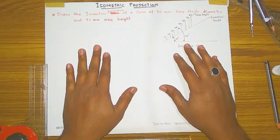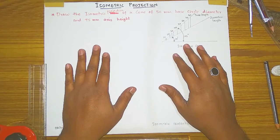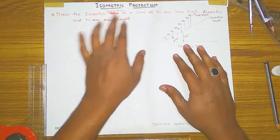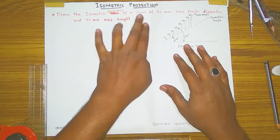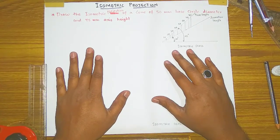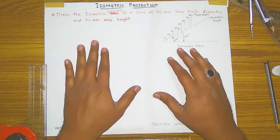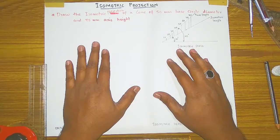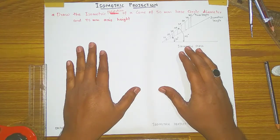You are watching WiseTechEngineering YouTube channel by Muhammad Abdul Mahbub. Today I am explaining the isometric problem — isometric projection of a cone. I am going to explain you in detail. This problem is applicable to diploma, ITI, and engineering students and is worth 10 to 15 marks for different branches.